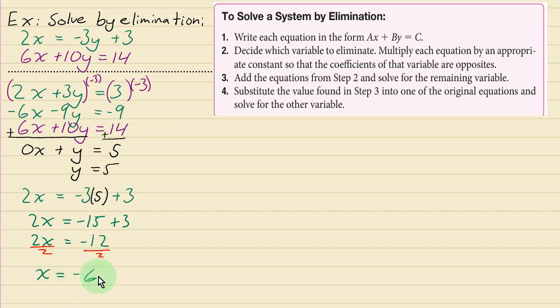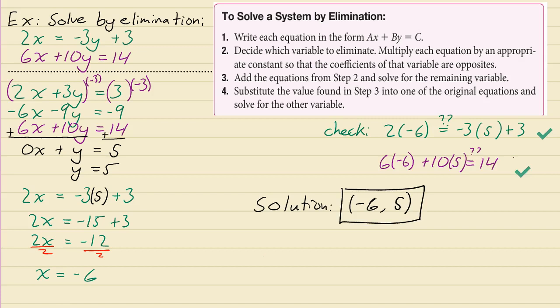We could always check it. In fact, I'm going to check it right here on the side. I just wanted to make sure that plugging in x equals negative 6 and y equals 5 into the two original equations made them true. And it does: 2 times negative 6 is negative 12, that's the same thing as negative 15 plus 3. And if you do negative 36 plus 50, that comes out to 14. So yeah, the solution is (negative 6, 5).